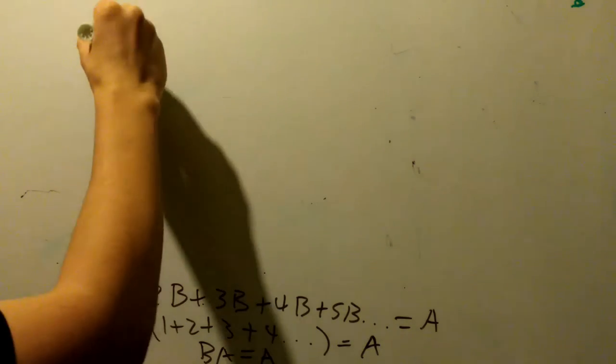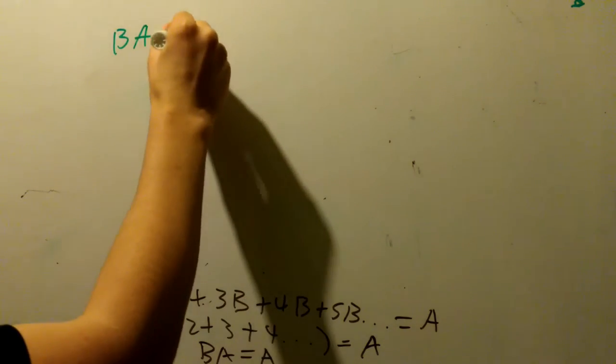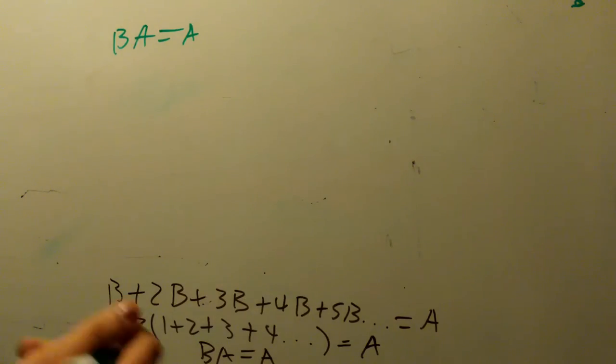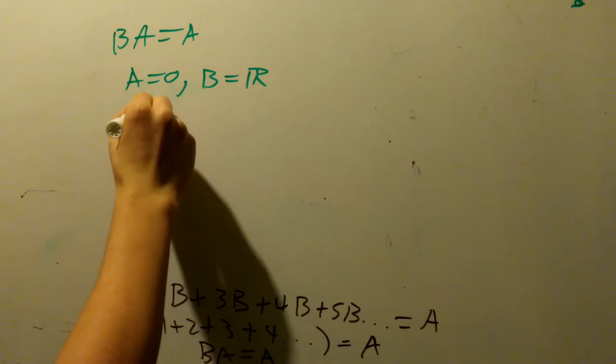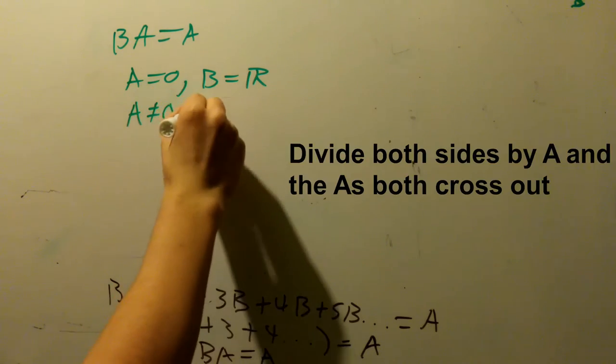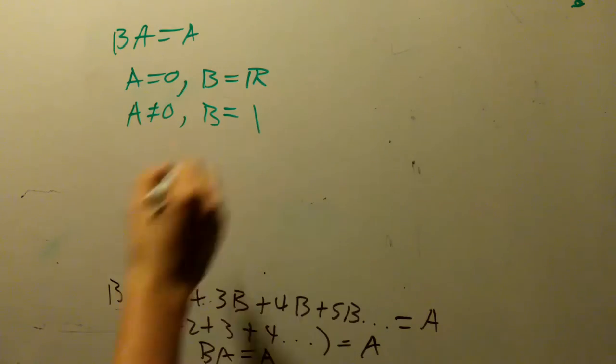So this will give you a couple solutions. We have B, A is equal to A. The first is, let's say that A is equal to 0. If A does not equal 0, then B is then equal to 1.